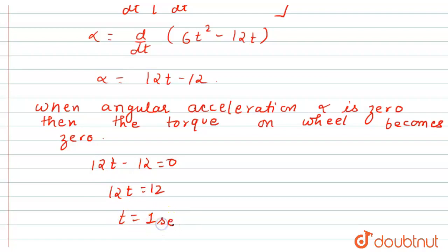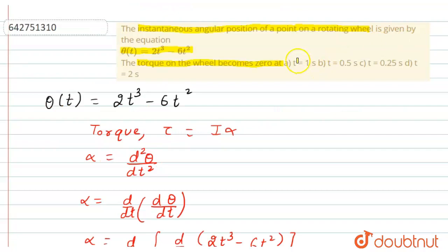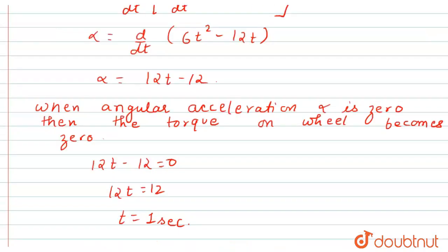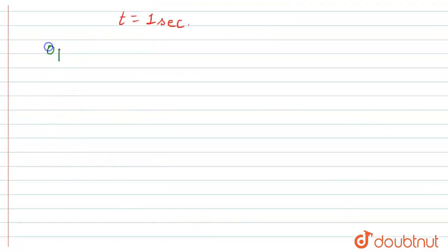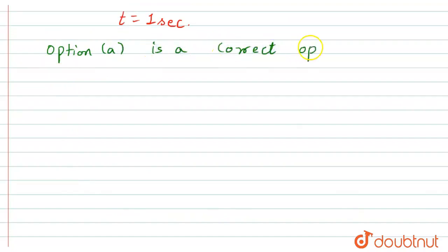From this, we find that the torque equals zero at time t = 1 second. So option A is the correct answer: t = 1 second. I hope you understood the explanation of this question.